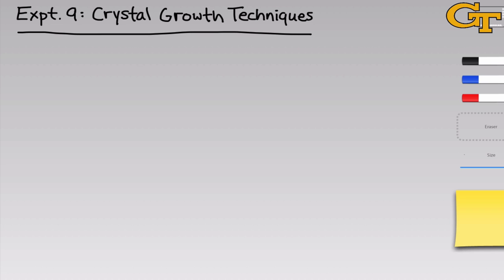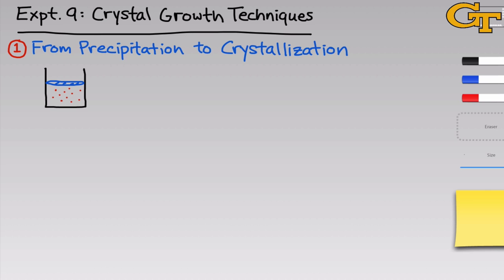Let's first revisit the idea of precipitation and explore how a solid can come out of solution. Imagine we had a solution of some solute. I've drawn the solute molecules in red here, and we introduced into that solution very rapidly either a solvent in which the solute is insoluble or some ion that causes the solute to come out of solution.